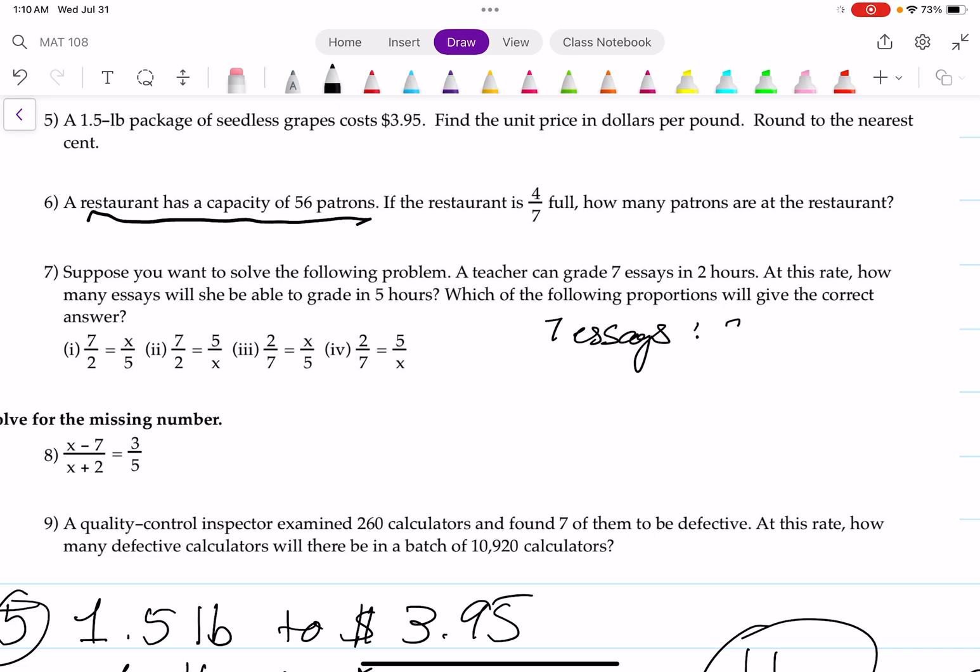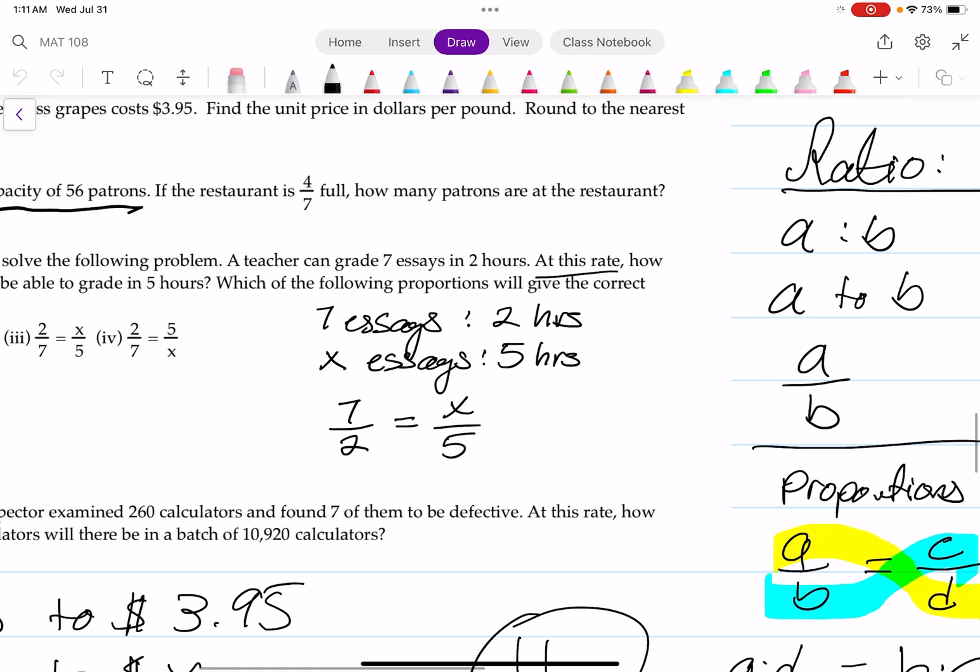We have 7 essays to 2 hours. I'm going to compare that to 2 hours. At this rate, how many essays can she grade in 5 hours? X essays to 5 hours. Because it's at the same rate, that is equal. Then we can have the proportion of 7 to 2 equals X to 5. Clearly, number one is an answer. What else can be a possible answer?